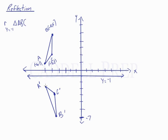If we look at the graph, we see that A prime is at (-6, -2), C prime is at (-5, -3), and B prime is at (-5, -7).